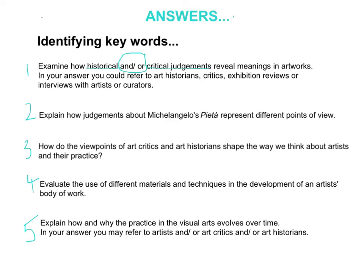Question three: How do the viewpoints of art critics and art historians shape the way we think about artists and their practice? You're going to have to talk from both perspectives — viewpoints of art critics and art historians — but you are also given the word practice here. So in a lot of ways you will have to address all three. It's important that you talk about a critical perspective and a historical perspective, but your exploration of the practice needs to be in depth as well.